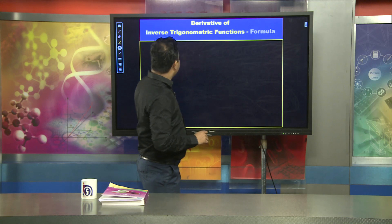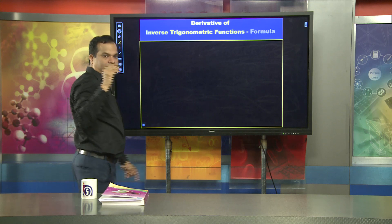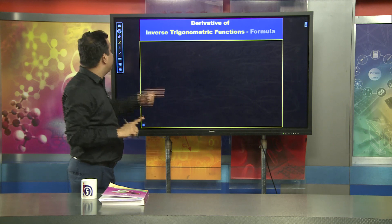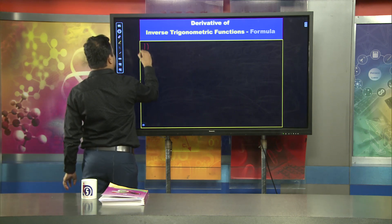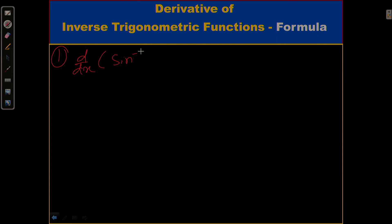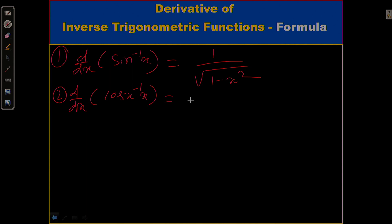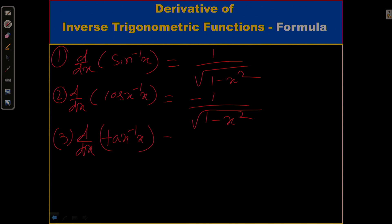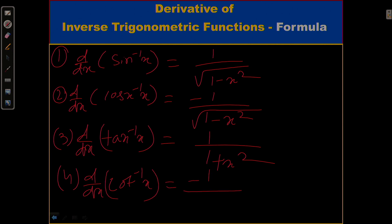Right now we will discuss about inverse trigonometric functions. When talking about inverse trigonometric functions, we must remember the formulas. The first formula is: derivative of sin⁻¹(x) = 1 / √(1 − x²). The second is: derivative of cos⁻¹(x) = −1 / √(1 − x²). Third: derivative of tan⁻¹(x) = 1 / (1 + x²). Fourth: derivative of cot⁻¹(x) = −1 / (1 + x²).